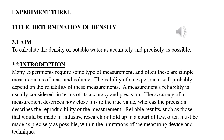Introduction: Many experiments require some type of measurement, and often these are simple measurements of mass and volume. The validity of an experiment will probably depend on the reliability of these measurements. A measurement's reliability is usually considered in terms of its accuracy and precision. The accuracy of a measurement describes how close it is to the true value, whereas the precision describes the reproducibility of the measurement.